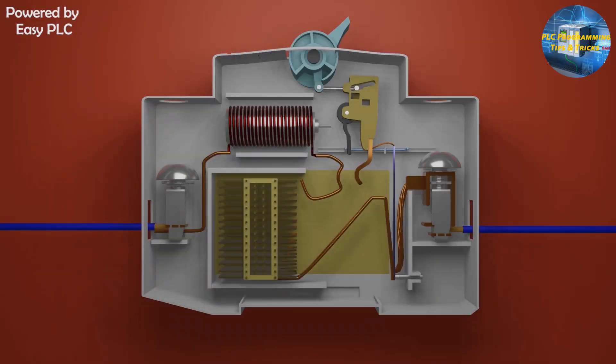If we see the side view of the MCB there you will see some components. First of all there are input and output terminals. We will always connect the input phase wire at input terminal and the load is connected at the output terminal.